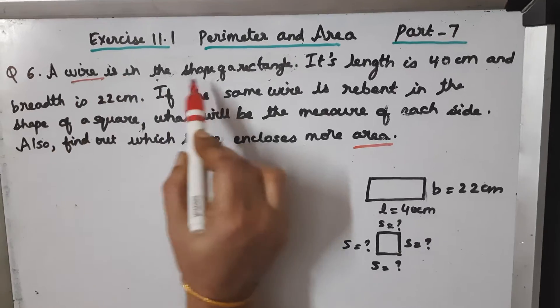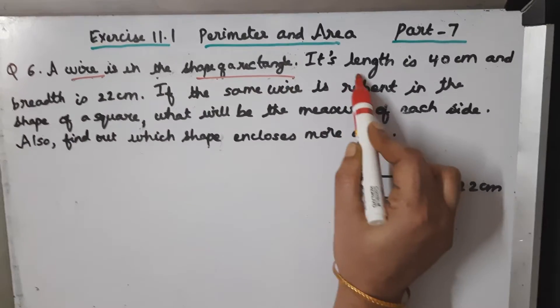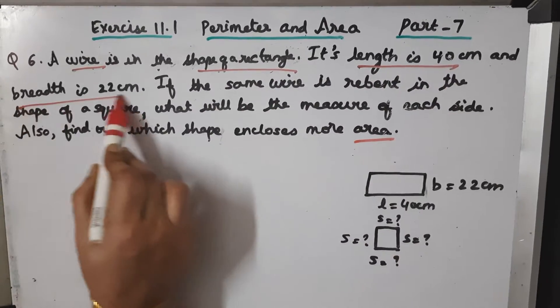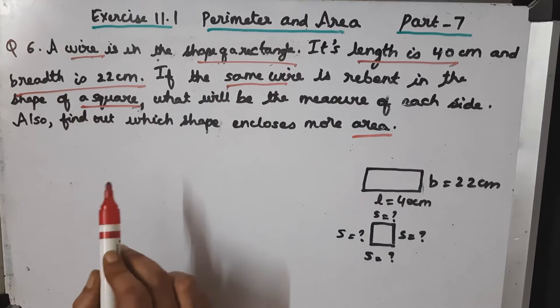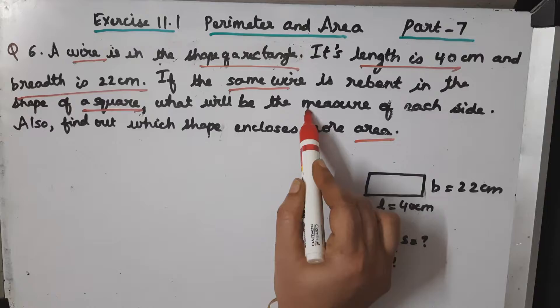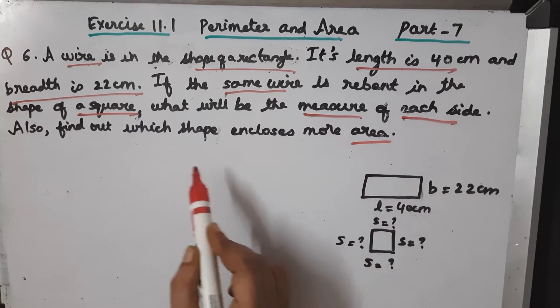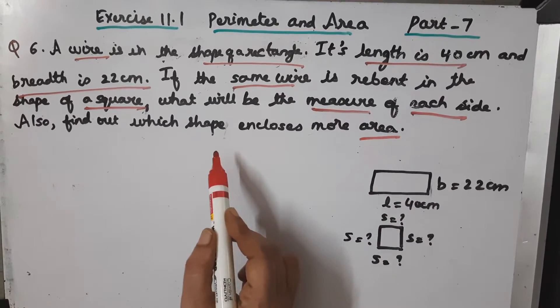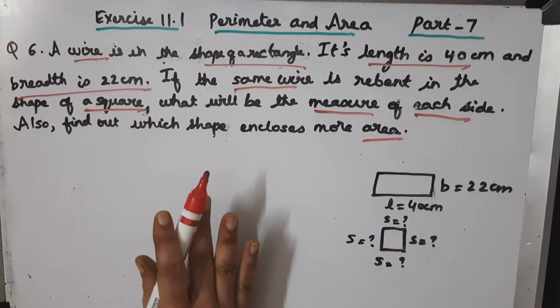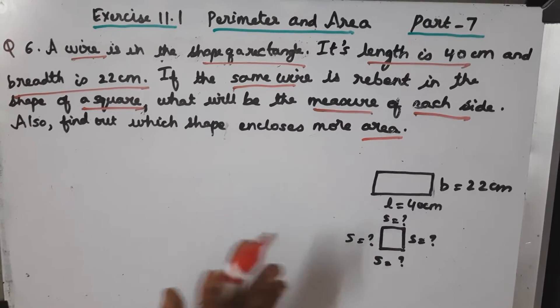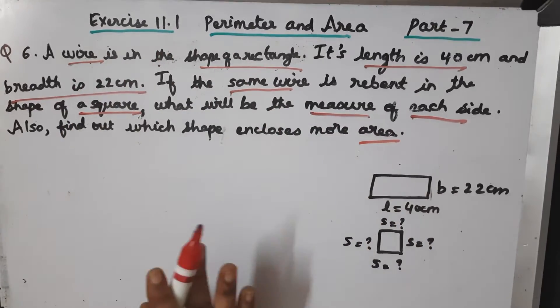So, a wire is in the shape of a rectangle of length 40 and breadth 22. The same wire is made into a square and you have to find out the measure of each side and also which shape has more area, whether rectangle or square.